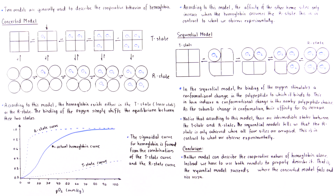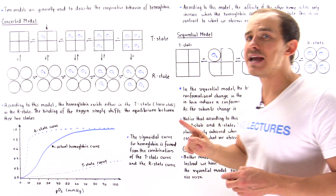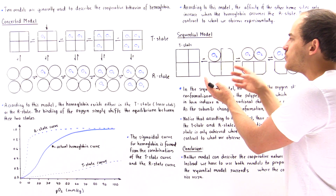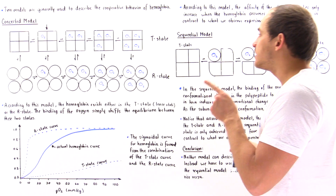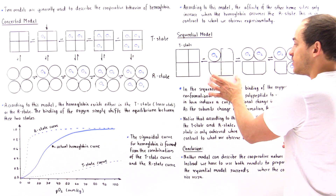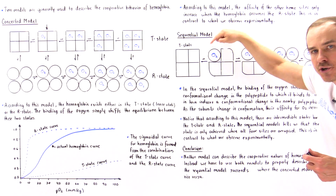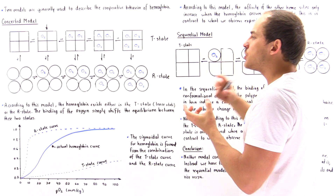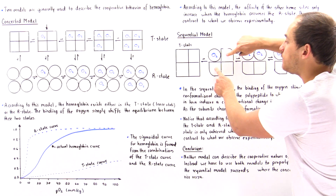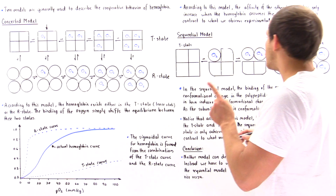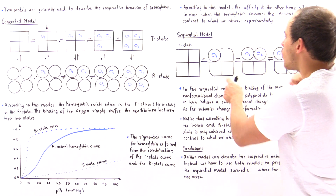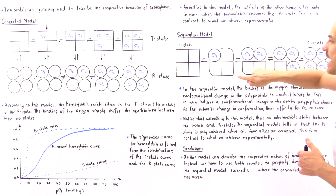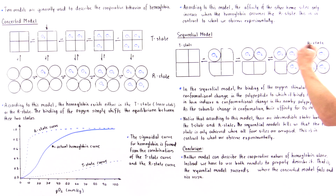To compensate for that limitation, we came up with the sequential model. In the sequential model, as soon as one heme group binds oxygen, it completely changes its shape, and that changes the shape of the entire polypeptide containing that heme group — represented by the square becoming a circle. Not only that, but nearby polypeptide chains also change their conformation slightly, increasing their affinity for oxygen, which is what we observe in nature.